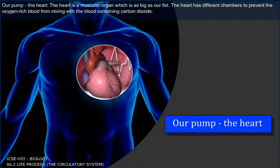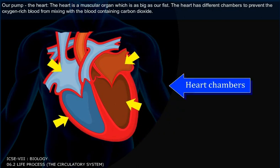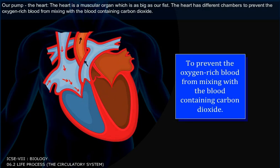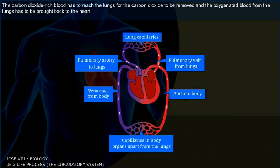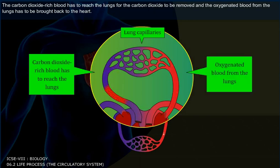Our pump, i.e. the Heart. The heart is a muscular organ which is as big as our fist. The heart has different chambers to prevent the oxygen-rich blood from mixing with the blood containing carbon dioxide. The carbon dioxide-rich blood has to reach the lungs for carbon dioxide to be removed, and the oxygenated blood from the lungs has to be brought back to the heart.